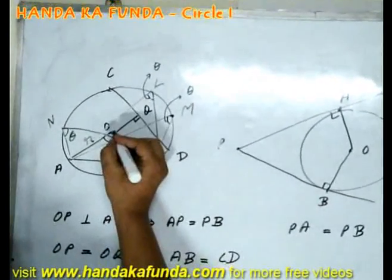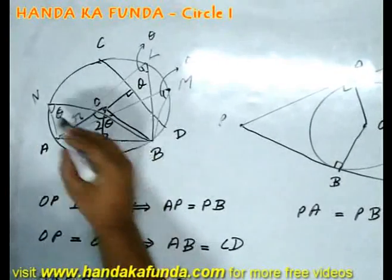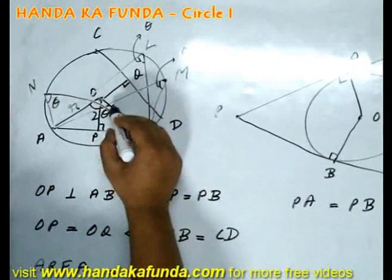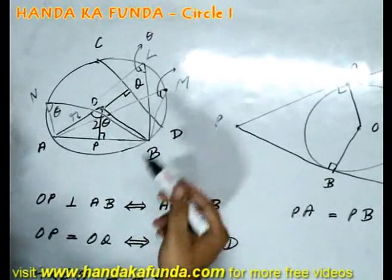Not only that, at the center, if a chord subtends theta at the circumference, at the center it will subtend 2 theta.